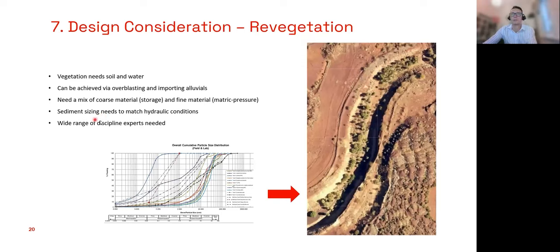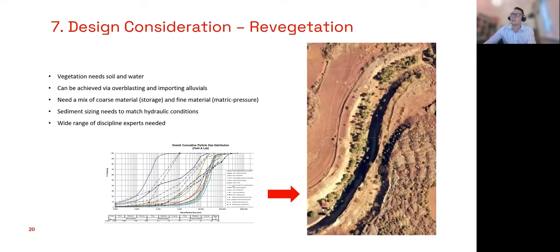There's a whole bunch of disciplines required, and this example shows all the particle size distribution work that was done, from which we designed the creek system. If you focus just on the creek itself, you can see a lot of riparian vegetation establishing — it's actually a very healthy, quite dense riparian environment now. Everything on the banks will be reshaped at closure and we'll have grasses and a neater appearance, but the key point is that the riparian vegetation is developing really well, mostly due to the particle size distribution of the material placed there.